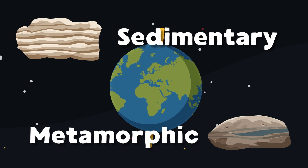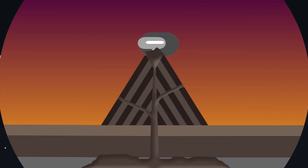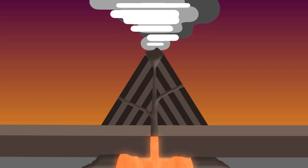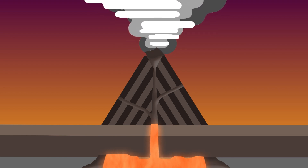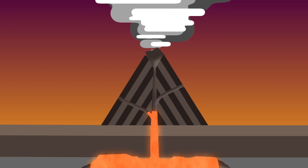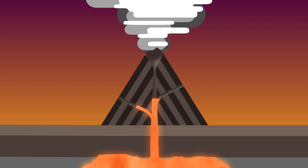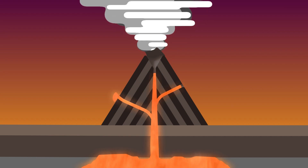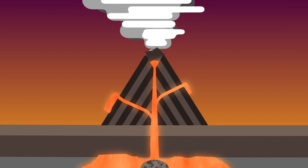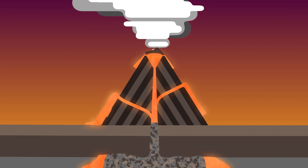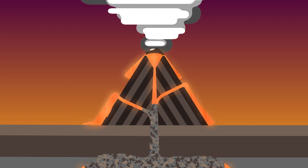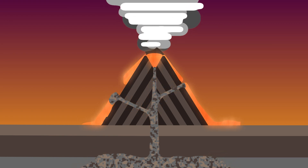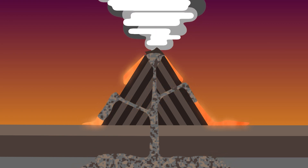Molten rock called lava reaches the earth's surface, and molten rock called magma is below the earth's surface. When this molten rock material cools and becomes solid, this is when igneous rocks form. Now you know this.